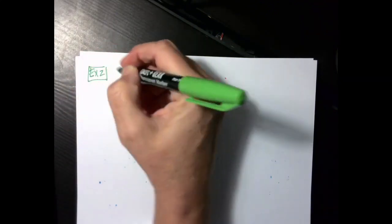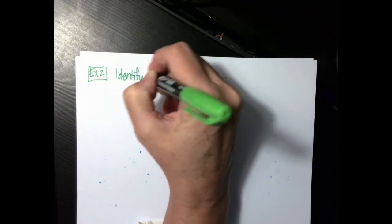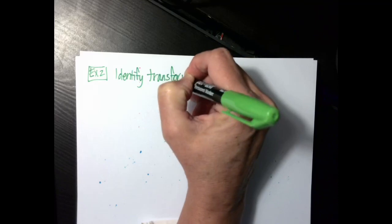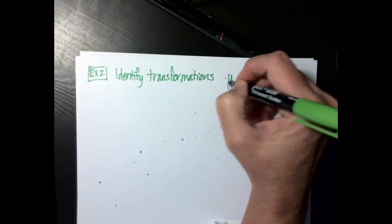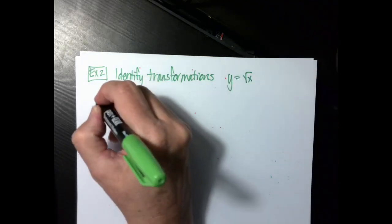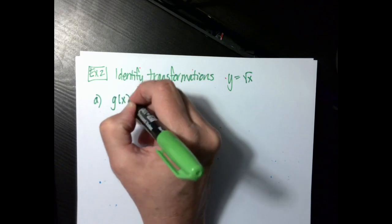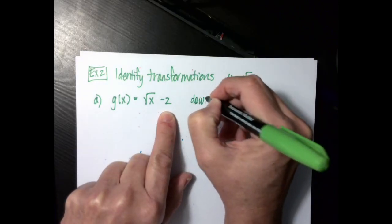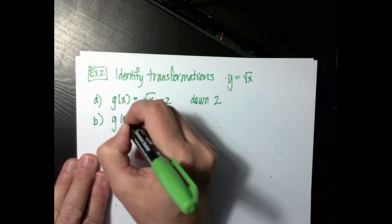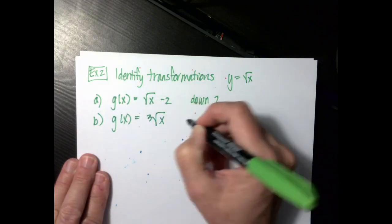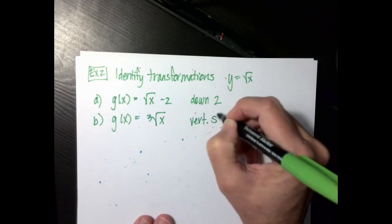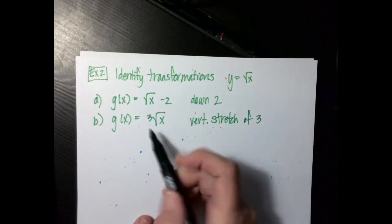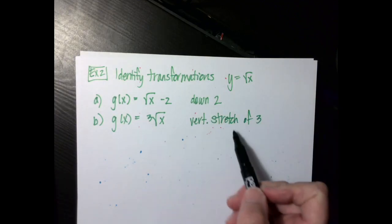Example 2 is about identifying transformations. Our parent function is y equal to the square root of x. For part a, g of x equal to the square root of x minus 2: this is outside the function, so it goes down 2. For part b, g of x equal to 3 times the square root of x: that is a vertical stretch of 3. It is outside the function, so it is a vertical change; it is bigger than 1, so it is a stretch.